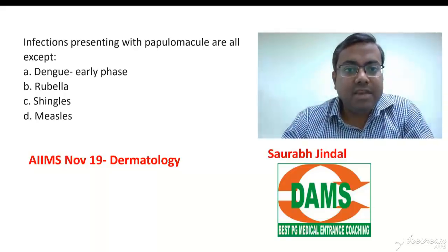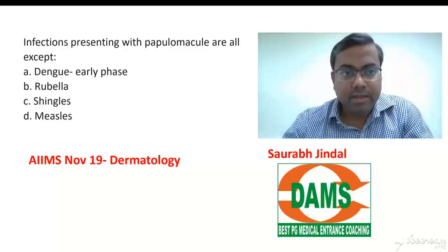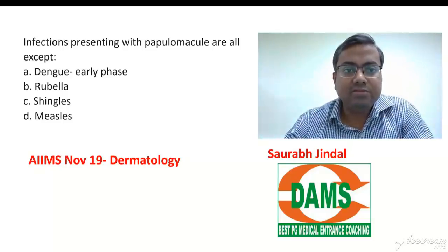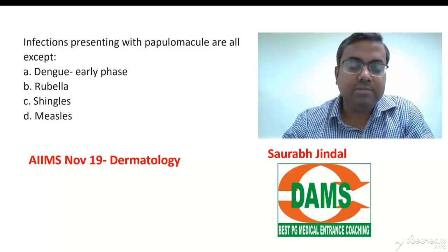The question is: infections presenting with papulomacular rashes are all except — dengue early phase, rubella, shingles, and measles.